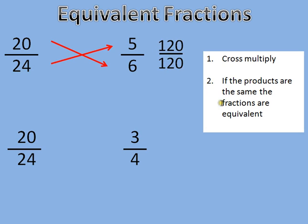So if the products are the same, the fractions are equivalent. So 20 times 6 and 24 times 5 both equal 120. These are equivalent fractions.